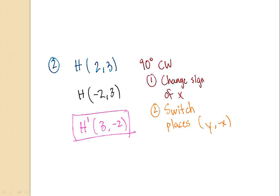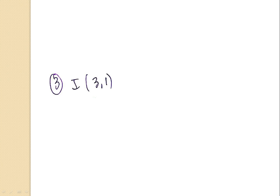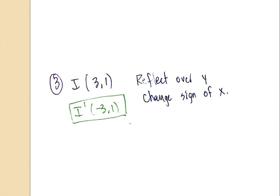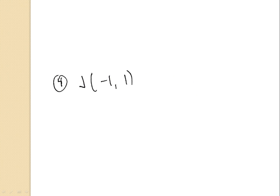Now that everyone has number two written down, let's move on to number three. Number three asks about point I. Point I is on the graph at the top of the page — specifically three comma one. The test asks us to reflect it over the Y axis. To do that, I have to change the sign of X. Does someone know how to reflect point I over the Y axis? If that person said I prime is negative three comma one, they are correct. Pause the video, check your partner, and make sure the teacher has seen that you have written down all of the notes for number three next to your question.